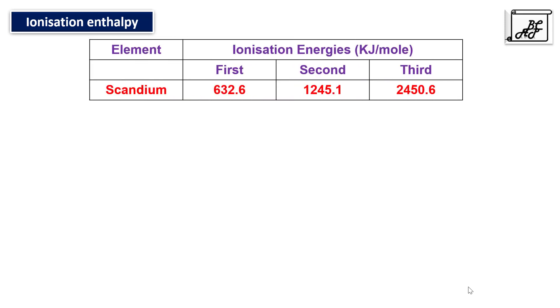Ionization enthalpy is the energy required to remove the last loosely bound electron in the outermost shell in the gaseous state. For scandium, the first ionization enthalpy — to remove the first electron — requires 632.6 kJ/mol. To remove the second electron, as nuclear charge increases and electrons are reduced, it becomes more difficult; the second ionization enthalpy is 1245.1 kJ/mol. Similarly, the third ionization enthalpy is 2450.6 kJ/mol.